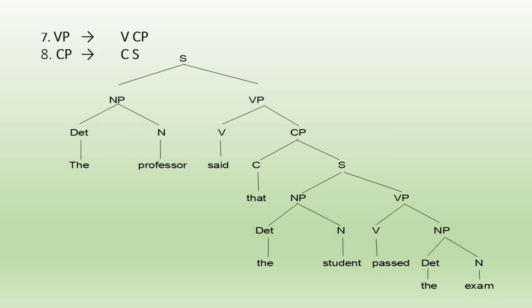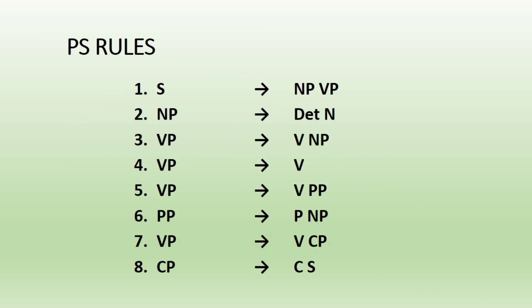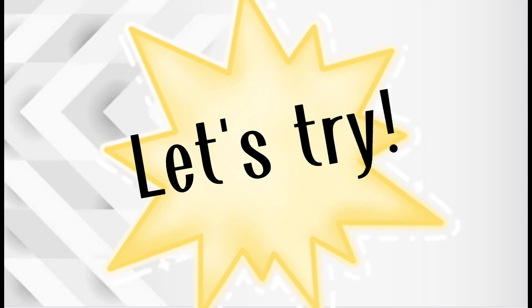So to sum it up, here are the PS rules we have discussed so far. We have eight rules: Rule 1 — S → NP VP; Rule 2 — NP → Det N; Rule 3 — VP → V NP; Rule 4 — VP → V; Rule 5 — VP → V PP; Rule 6 — PP → P NP; Rule 7 — VP → V CP; and Rule 8 — CP → C S.